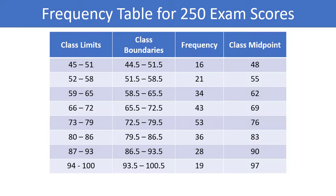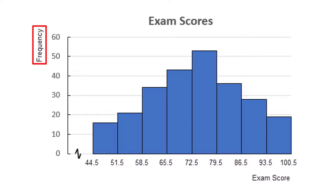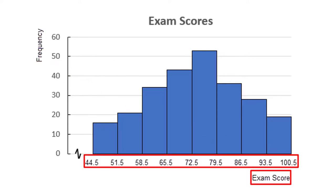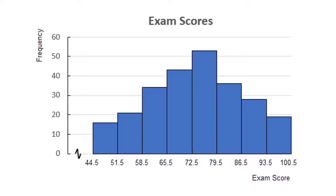The graphical representation of a frequency table is what is called a histogram. We have graphed the frequencies on the vertical axis and the exam score class boundaries on the horizontal axis. Each class from the frequency table becomes a bar in the histogram. From the histogram we can easily see that the most common exam score is between 72.5 and 79.5. There are a few different methods of constructing a histogram with subtle differences between each method, and I will be showing you how to create one from a raw data set throughout the rest of this video.